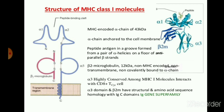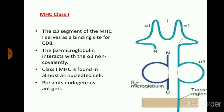Alpha 3 domain and beta-2 microglobulin have structural and amino acid sequence homology with the immunoglobulin C domain, that is the IgG superfamily. MHC class 1 has the alpha 3 segment which serves as a binding site for CD8. In this figure you can see that alpha 1 and alpha 2 bind to the antigen, and alpha 3 binds to the T cell — specifically the alpha 3 segment binds towards the CD8 T cell.